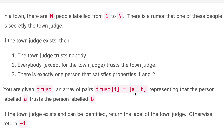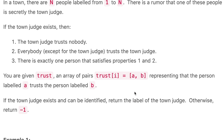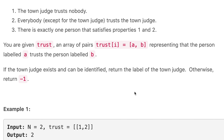The question says: in a town there are N people labeled from 1 to N. There is a rumor that one of these people is secretly the Town Judge. If the Town Judge exists, then the Town Judge trusts nobody, and everybody except the Town Judge trusts the Town Judge, and there is exactly one person that satisfies these properties. We are given an array of pairs where trust[i] = [a, b] represents that person a trusts person b. Return the label of the Town Judge if they exist, otherwise return -1.